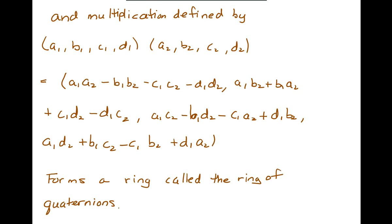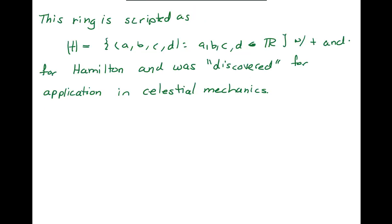And in fact, this ring of quaternions is discussed in a section later on in Fraleigh where he talks about non-commutative rings. I'm not sure it's expressed in the way that I've expressed it here. This ring is scripted with an H because it's named for a scientist named Hamilton. And it was discovered for a specific application to celestial mechanics.